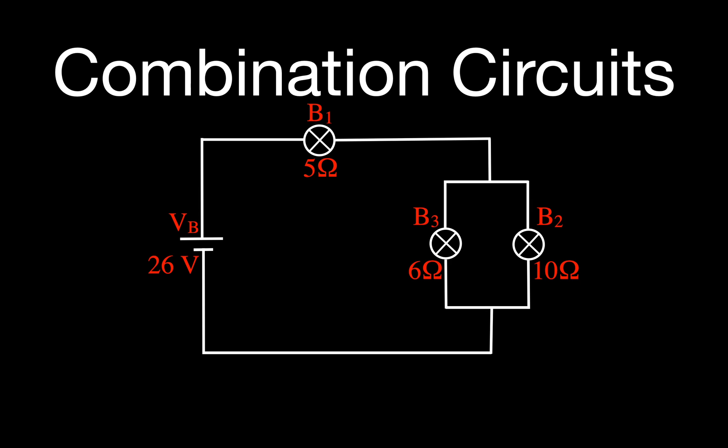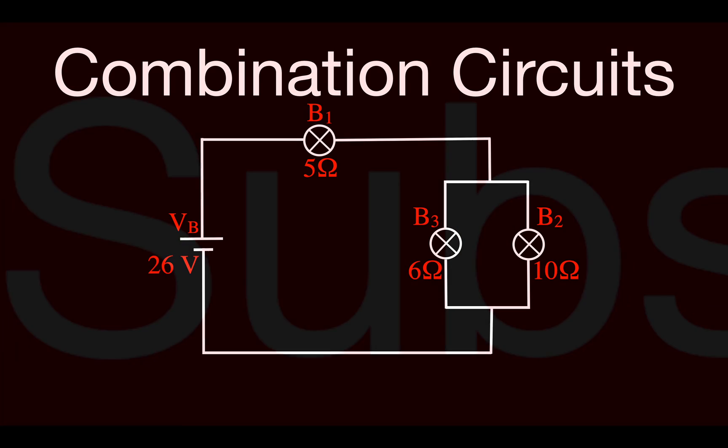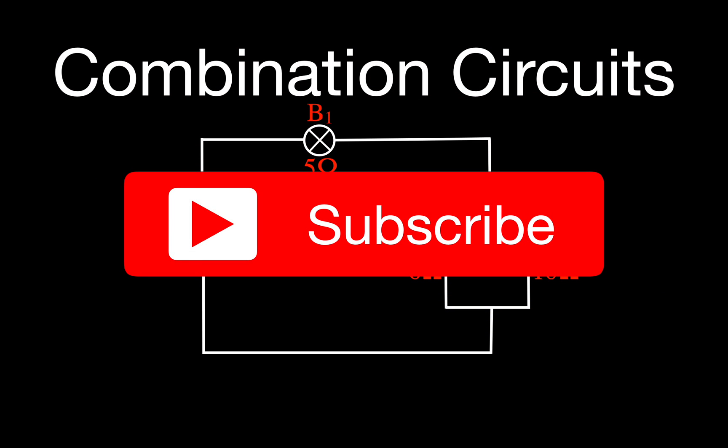In the previous video, which you can link to in the upper right-hand corner, we went over a qualitative analysis of the two different combination circuits. In this video, we're going to do a quantitative analysis — we're going to do the math and calculate the current and the voltages across those circuit elements for both kinds of combination circuits. Please don't forget to subscribe to Step-by-Step Science to get all of our physics, chemistry, and math videos.